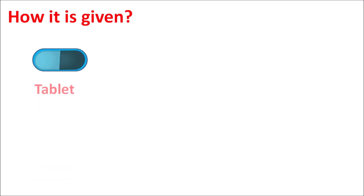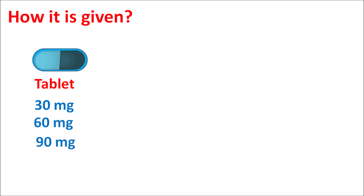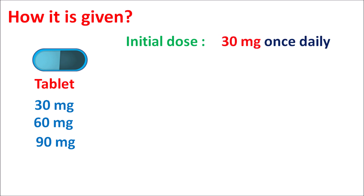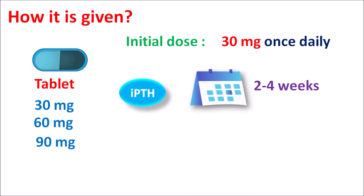How is it given? This drug is available as tablets in strengths of 30 mg, 60 mg, and 90 mg. The initial dose is started at 30 mg once daily. The dose can be increased based on the estimation of iPTH levels. After two to four weeks of treatment, the dose can be increased to 60 mg once daily, with slow increments up to a maximum dose of 180 mg once daily. At higher doses, there is a high risk of hypocalcemia, induction of seizures, and development of adynamic bone disease.